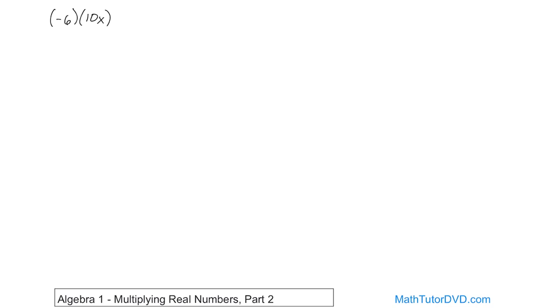So the rule for multiplication is when the signs match, you get a positive answer. If they're both positive, they're both negative, you always get a positive result. But if the signs are different from one another, if they're opposite, then you always get a negative answer.